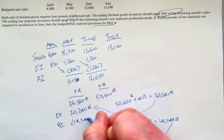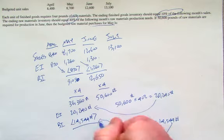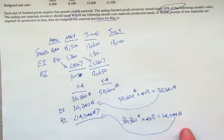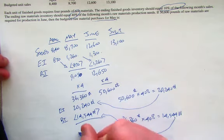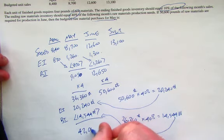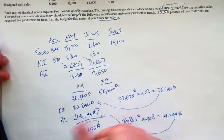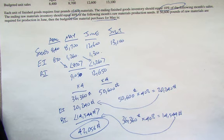Bring that over here as a beginning inventory. Now let's just bring it to completion here. 36,360 plus 20,240 minus 14,544 gives us 42,056 pounds. That's how much we need to plan to purchase for the month of May.